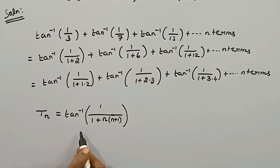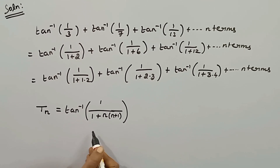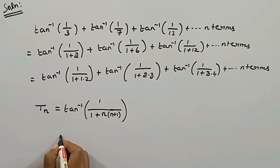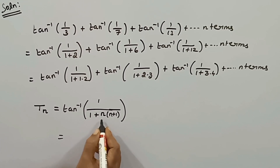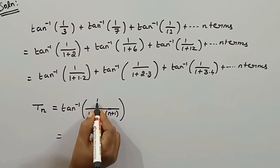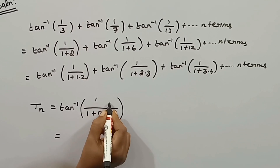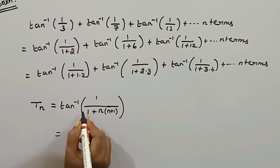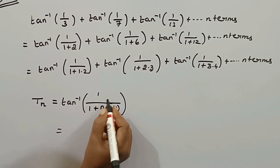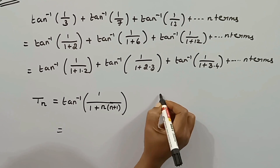This is the general term of the given series. In the denominator there is 1 plus n into n plus 1, and in the numerator there is 1. We need to apply the formula: tan inverse of a minus b divided by 1 plus ab. This is the general formula.